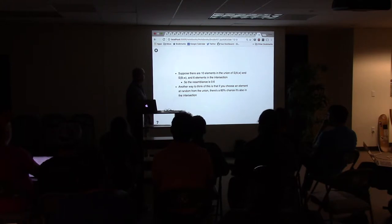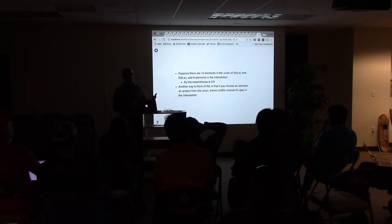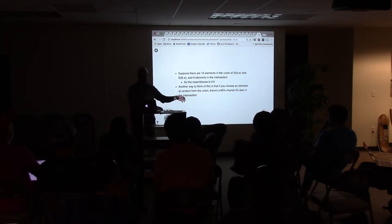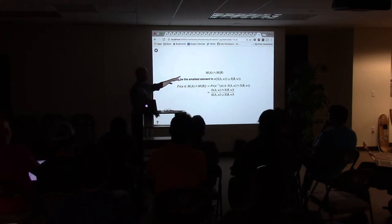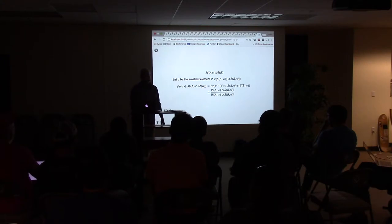To make it even simpler: imagine there are ten elements in the union of SA and SB, and six elements in the intersection — so the resemblance is 0.6. Another way of thinking about that: if you choose an element at random from the union of the two things, there's a 60% chance that it's also in the intersection. That'll make more sense in a few minutes, I hope.